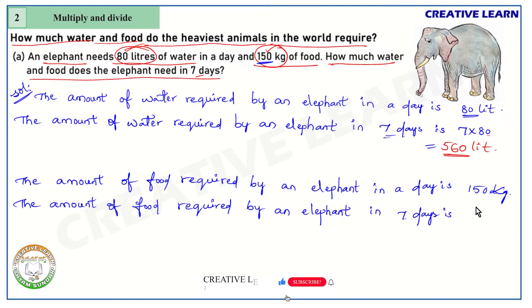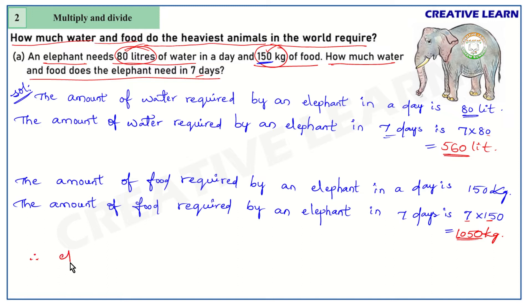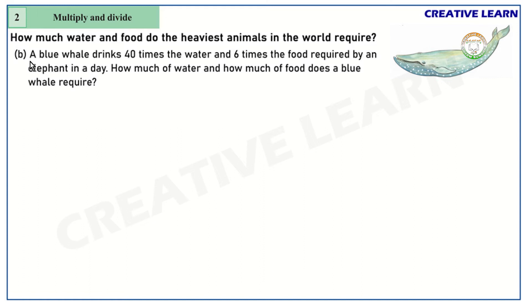Just multiply the quantity: 7 into 150 kg. In the ones place there is zero, so keep the zero. Remaining number is 15; 15 sevens are 105, so the total food is 1050 kg. Therefore, an elephant needs 560 liters of water and 1050 kg of food in seven days.